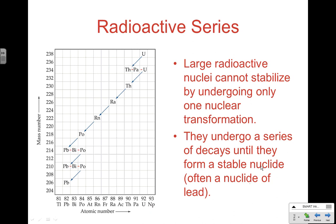A radioactive series describes the sequence of decays that happen as something radioactive eventually becomes stable. Smaller atoms can often undergo one type of decay to become stable, but larger things like uranium-238 must undergo many decays to eventually become stable lead-206. The large drops in the graph are alpha decays. When going from, say, Th to Pa to U-234, those are beta decays. Large atoms usually undergo a combination of alpha and beta decays to eventually become stable.